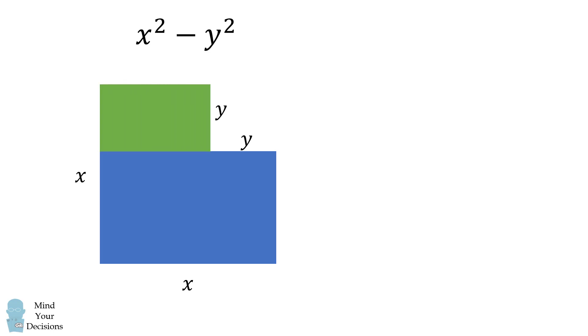This shape will be the composition of two different rectangles. One rectangle will have one side length equal to y and another side length equal to x minus y. The other rectangle will have one side length equal to x and the other side length equal to x minus y.